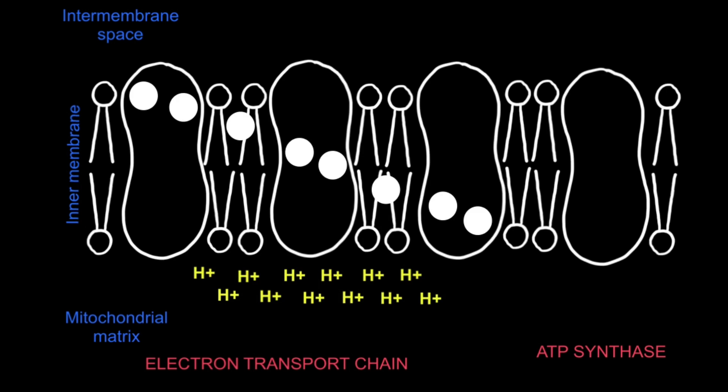These are transported to the inner membrane of the mitochondrion and to the cristae. In the inner membrane there is a series of electron carriers represented by the white circles here.